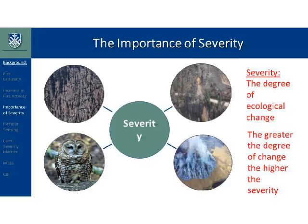This is where severity comes into play. Severity is simply the degree of ecological change — the greater degree of change, the higher the severity. It's important because it impacts ecosystems at the plot and landscape level. High severity fires will consume large amounts of above- and below-ground biomass, affect vegetation structure and composition, cause negative impacts to watersheds, destroy wildlife habitat, and affect the carbon cycle by increasing carbon emissions and decreasing carbon sinks — all reasons to study severity.